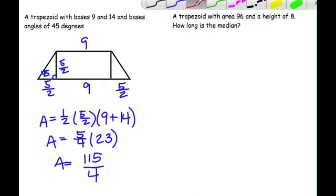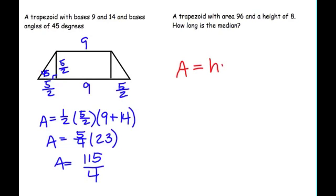Now here, we want to find out the median. Remember that our median formula was the area of the trapezoid is equal to the height times the median. And so if we do this, we can just fill in what we know. Area is 96 is equal to 8 times M. We'll go ahead and solve that to get our median to be 12.